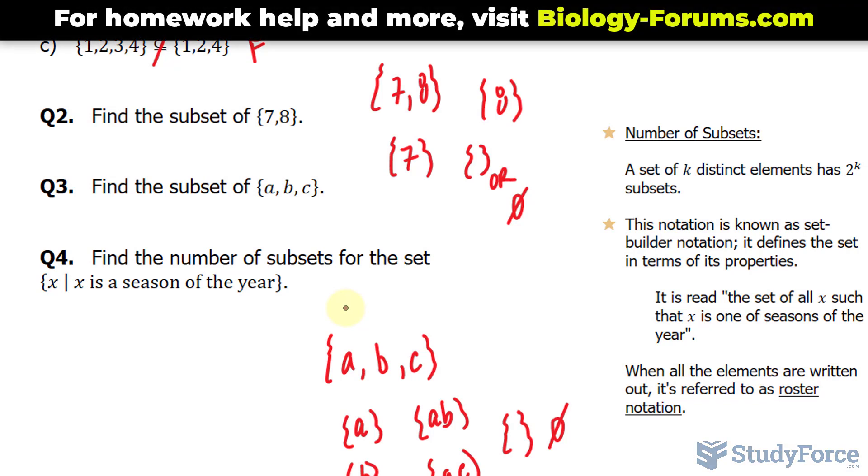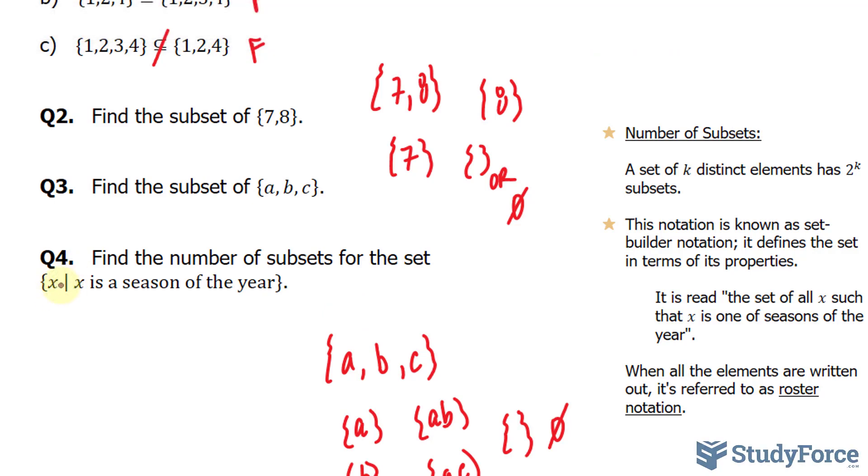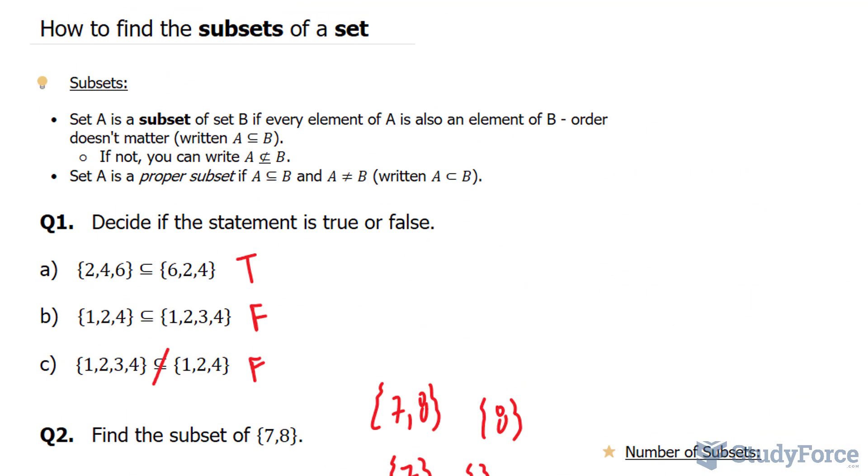So the way you read this is, the set of all x such that x is a season of the year. So since we have four seasons, 2^4 gives us the number 16 subsets for this particular set. And there you have it. That is how to find the subsets of a set.